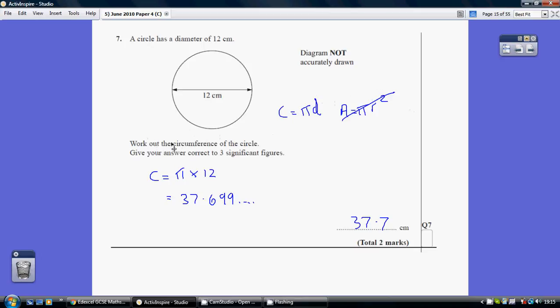Now, on this occasion, we're being asked to work out the circumference, so we can cross this one out. So, the circumference equals pi times the diameter.